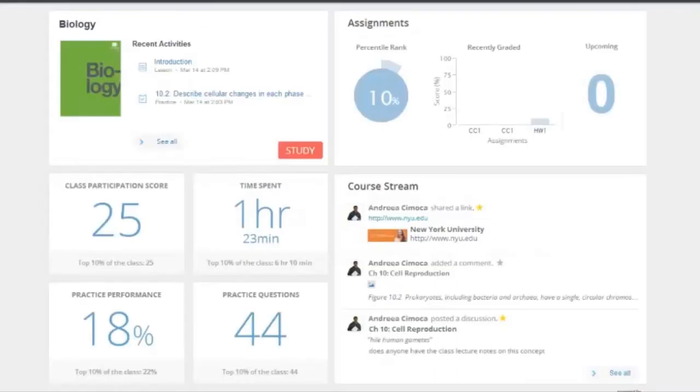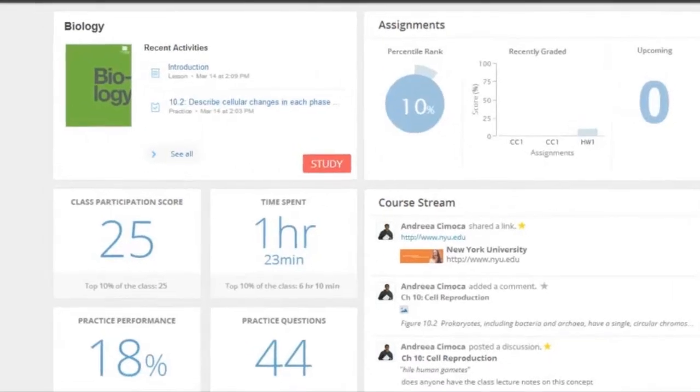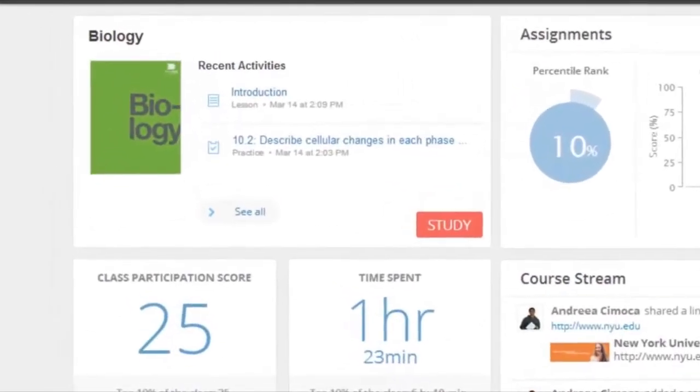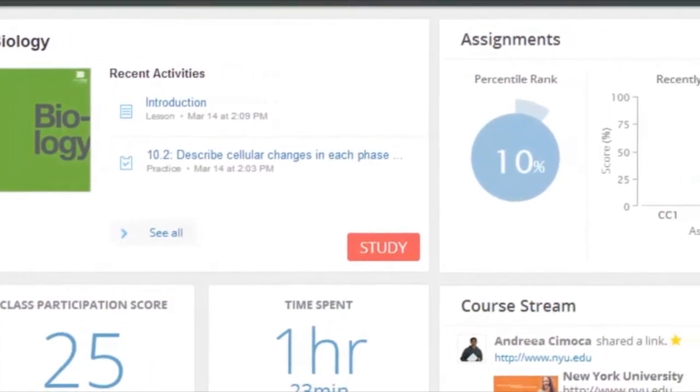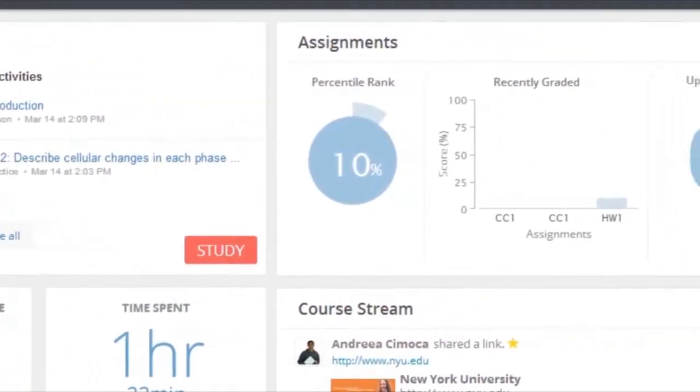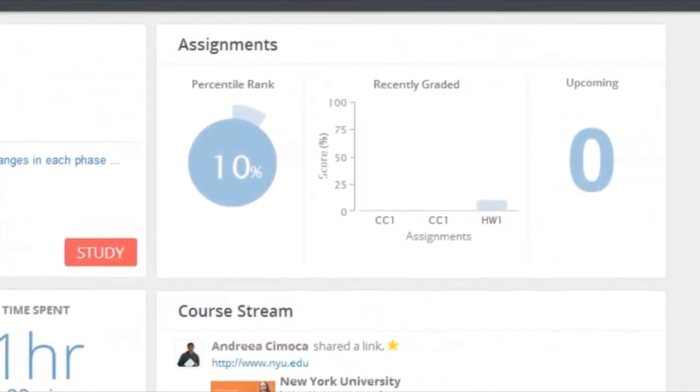When students first log in, they see their dashboard, highlighting four areas that will help students engage differently. In the upper left, the course content area is where students can access the dynamic, mobile-friendly e-textbook with embedded media-rich resources like videos, animations, and more. On the right, student assignment performance is where students can see status of upcoming assignments, their overall grade within the class, and a snapshot of results on recent assignments.